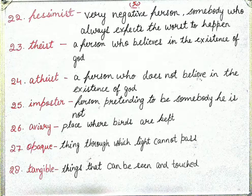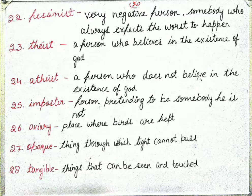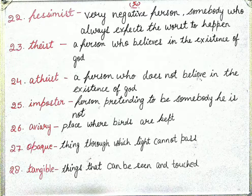Next is 'aviary' — a place where birds are kept. Next is 'opaque' — something through which light cannot pass. Aisi cheezein jinke aar paar light na ja sake unhe opaque kehte hain. The next is 'tangible' — things that can be seen or touched. For example: book, wall, glass.